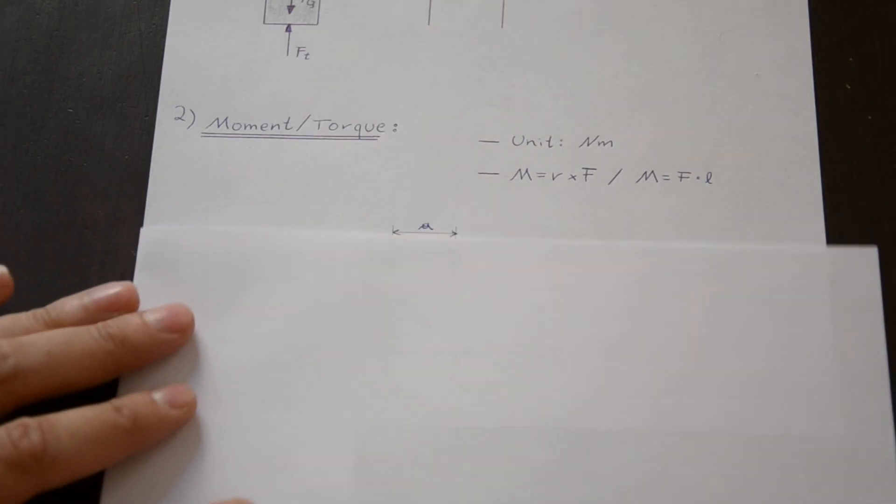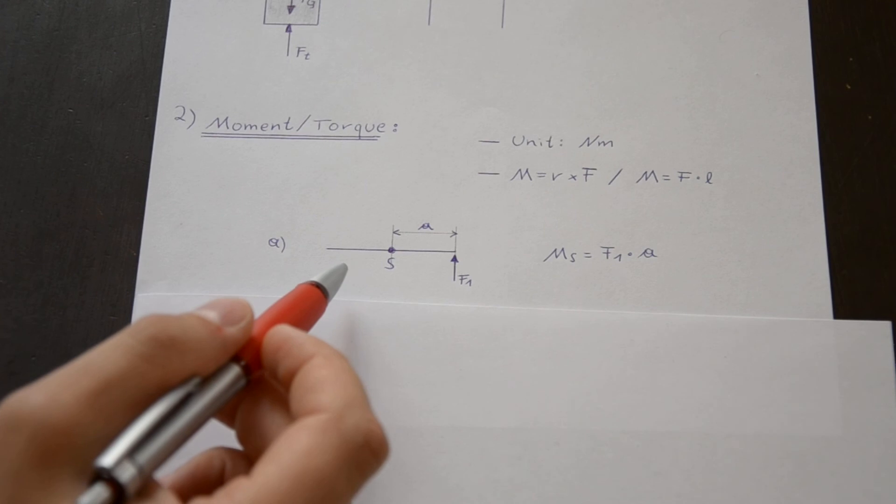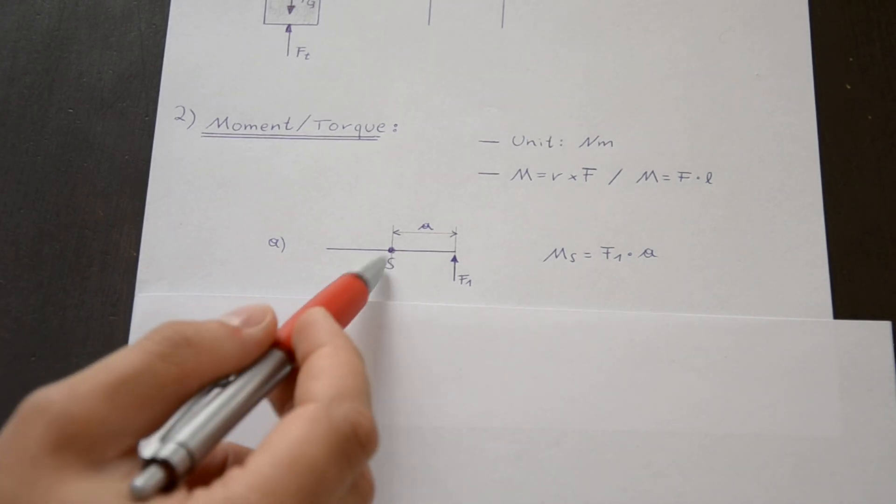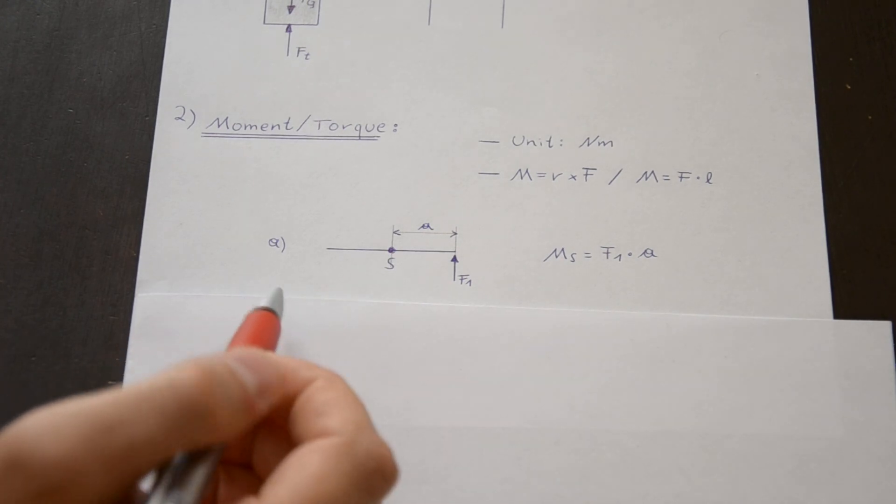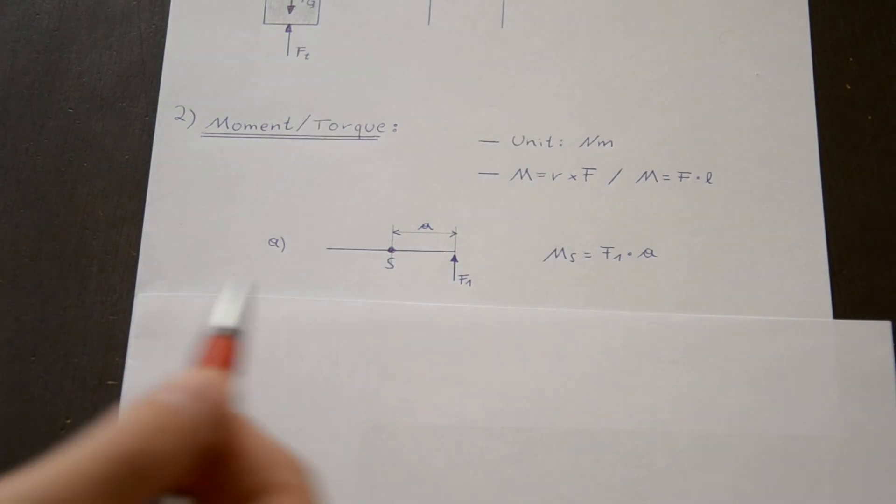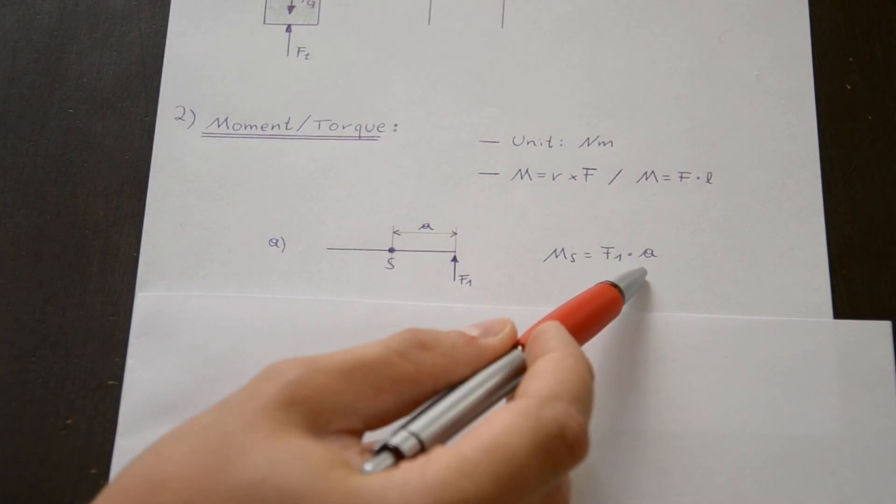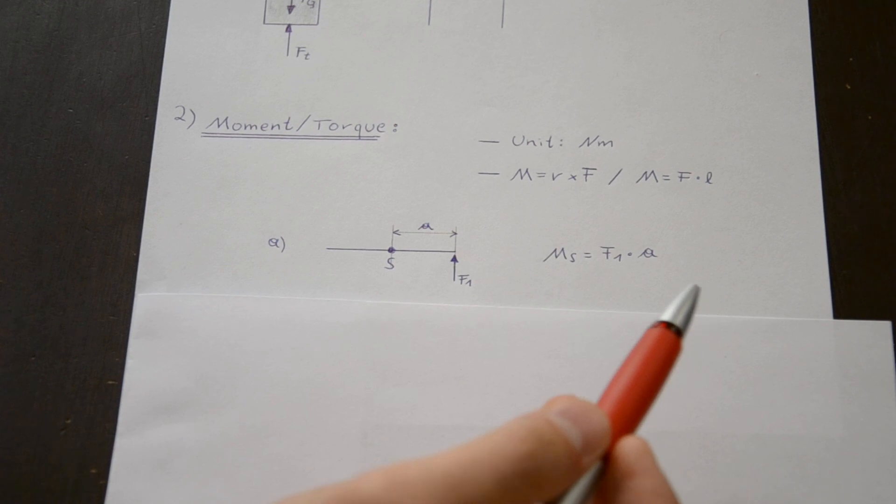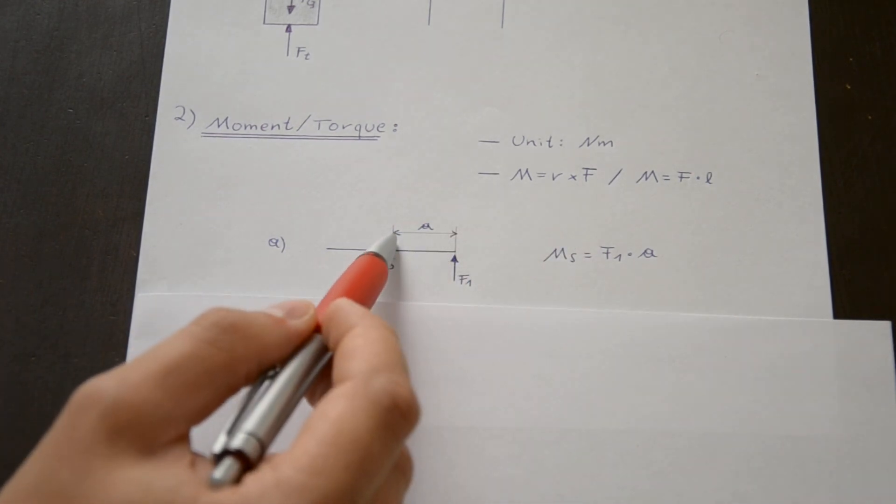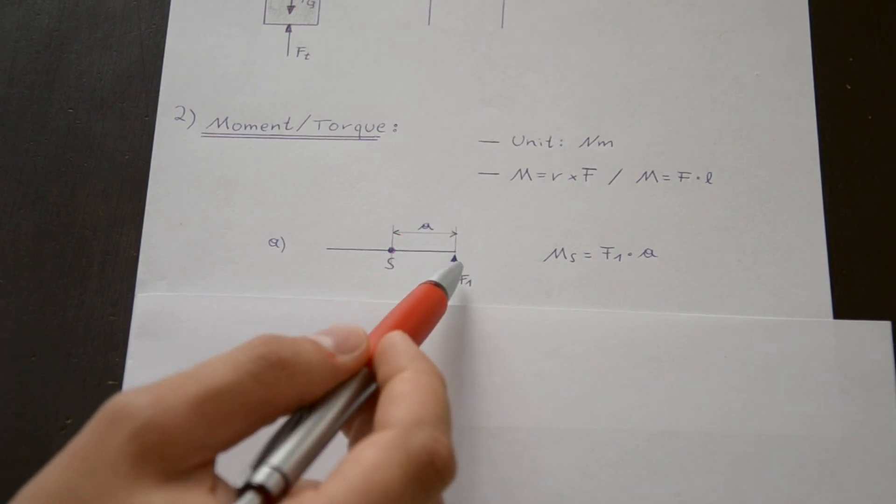Now I have prepared a little example to make this easier to understand. This is kind of a lever which is pivoted at the point S. So in the first case, the torque, the moment concerning point S, is F1 multiplied with A, just because it is at right angles to the force F1. The distance A is at right angles to the line of action of the force F1. This is the important thing.